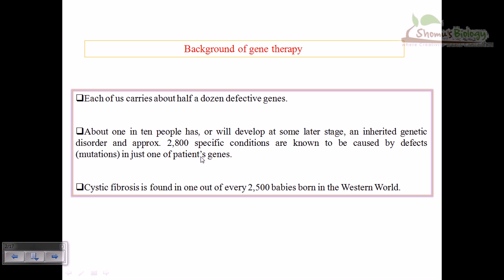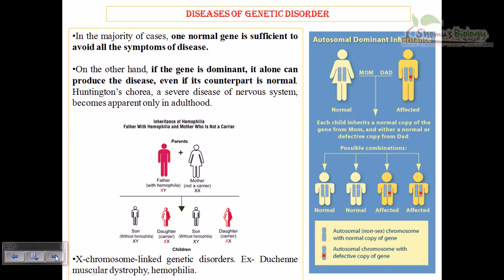I'm trying to convince you that it is pretty common to have a genetic disorder. For example, cystic fibrosis is found in 1 out of every 2500 babies born in the Western world, but not commonly in the Indian subcontinent region including India, Sri Lanka, and Pakistan.